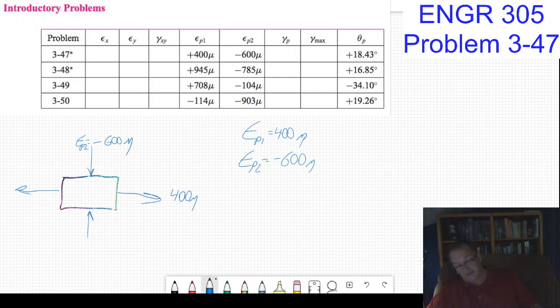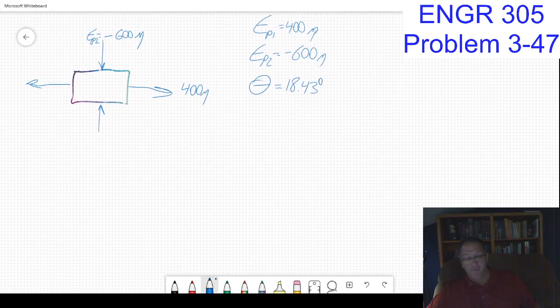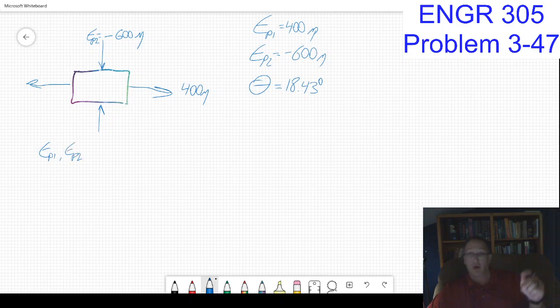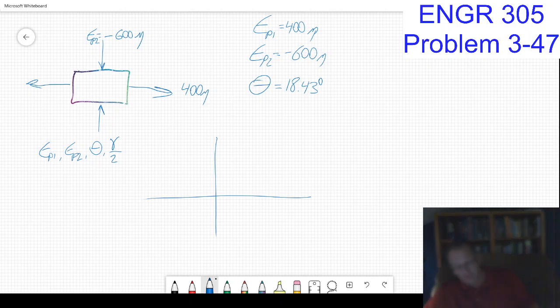I want to solve this problem using Mohr's circle. The only other piece of information I have is theta equals 18.43 degrees. If I'm doing Mohr's circle, you have to remember I'm going to plot epsilon_p1, epsilon_p2, or epsilon_x, epsilon_y, and shear strain, but it's gamma over two. Those are the things that go in.